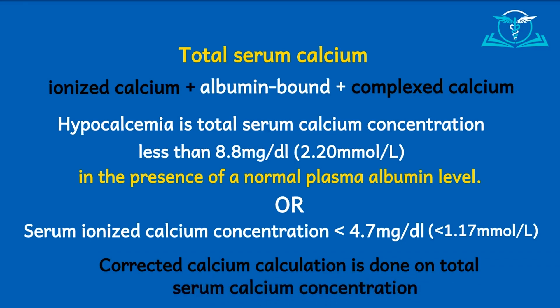It means that if a lab reports a serum ionized calcium concentration and it's less than normal, that is in fact the true value. But if what you got was a total serum calcium level, because albumin levels can affect it, you may have to calculate the corrected calcium concentration. The corrected calcium calculation is done on total serum calcium, not serum ionized calcium concentration.